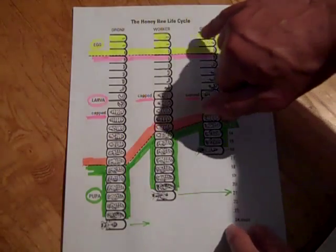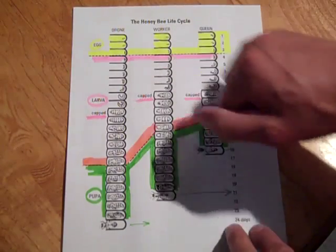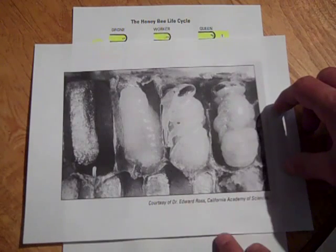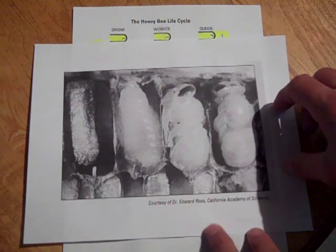When I see eggs in the first 3 days, I know that the queen has been there in 3 days. Here's another diagram here, actually a photograph, a cross section of the caps.